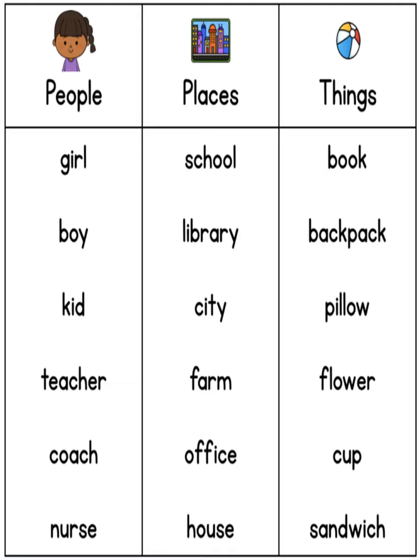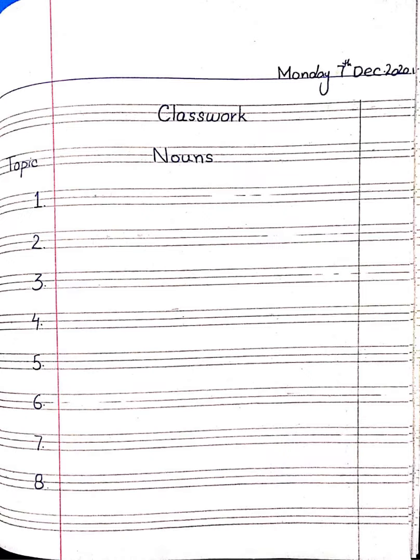तो आप लोग अपनी notebook ready करेंगे। मैंने आप लोगों को बहुत से Nouns बताए। यह मैंने class में भी discuss किया था कि Nouns क्या होते हैं — आप लोगों को याद होगा। अब आप लोगों ने यह करना है: copy ready करनी है। Classwork topic: Nouns। यहां पर numbers दी हैं — 8 से शुरू करें, जितने आपको आते हैं लिखें। जितना अच्छे से लिख सकें, कोशिश करें।